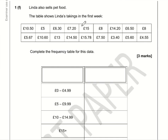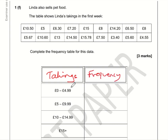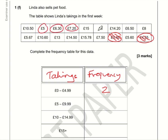For part F, Linda also sells pet food. The table shows Linda's takings in the first week with ranges and frequencies. Between £0 and £4.99 there are two entries, so frequency is 2. Between £5 and £9.99, counting the entries: 1, 2, 3, 4, 5, 6, 7, 8, 9.